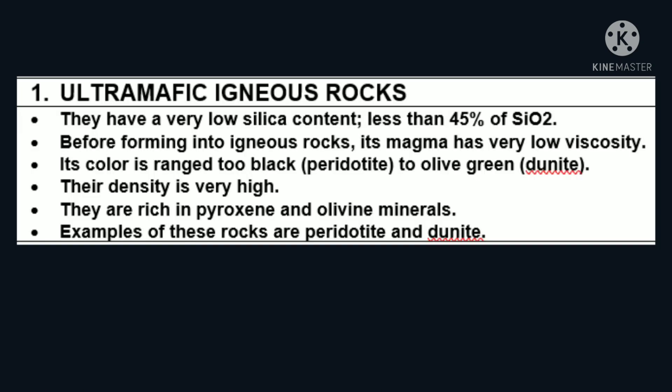Ang una ay ang ultramafic igneous rocks. Mayroon itong very low silika content, less than 45%. Before forming into igneous rocks, ang magma nito ay mayroong very low viscosity. Ang kulay ay black to olive green, mataas ang density, at rich in pyroxene and olivine materials. Ang examples nito ay ang peridotite at dunite.